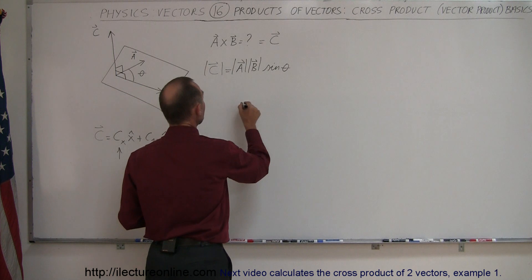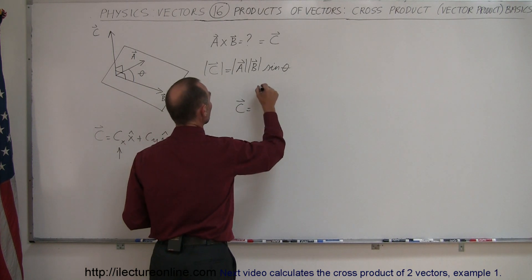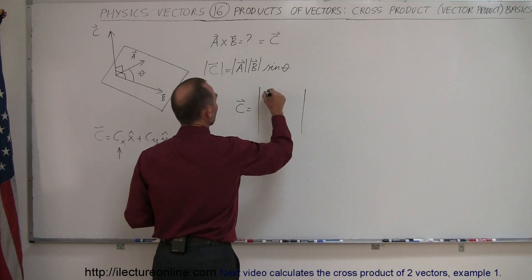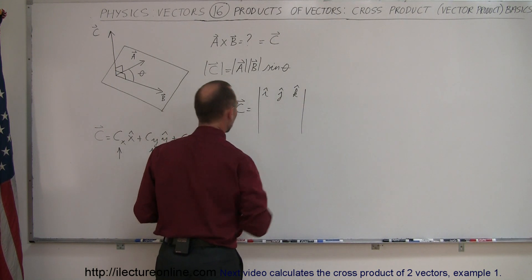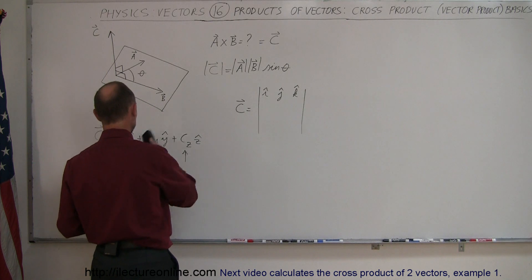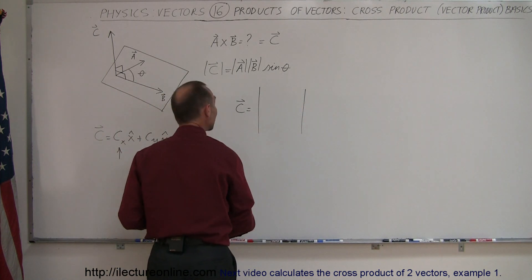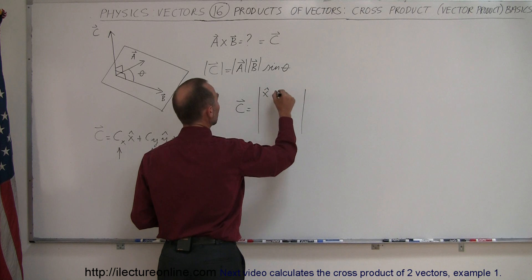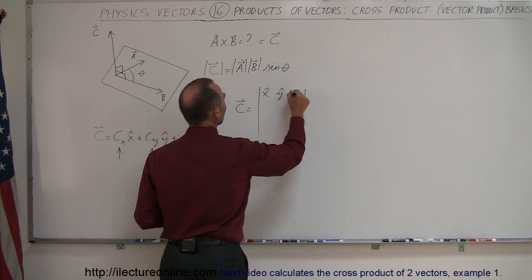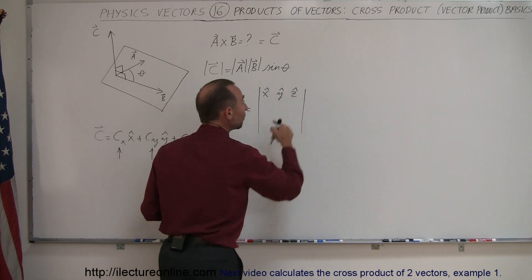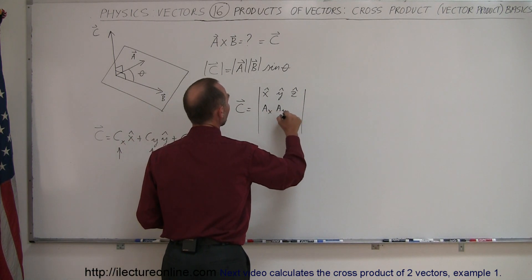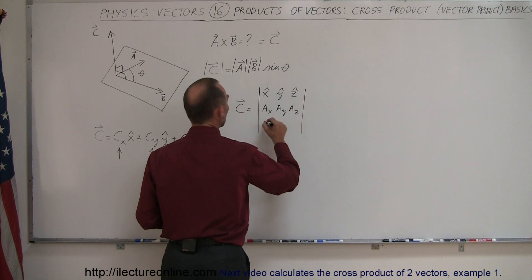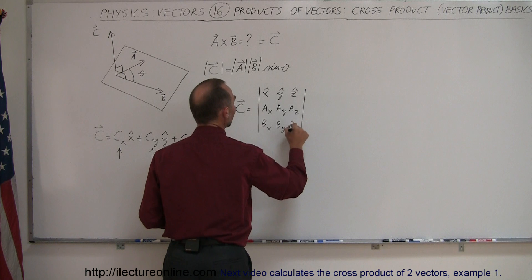Vector C is found using a determinant. The first row contains the unit vectors X, Y, and Z. The second row contains the components of vector A: A sub X, A sub Y, and A sub Z. The third row contains the components of vector B: B sub X, B sub Y, and B sub Z. The result of that determinant gives you the components of vector C.